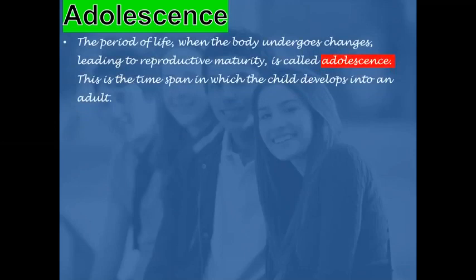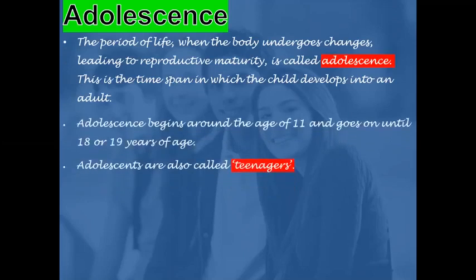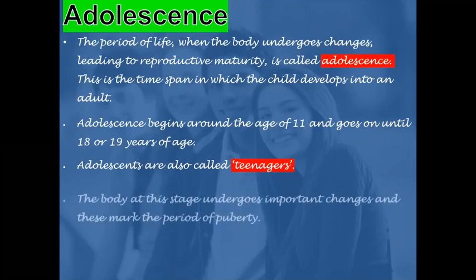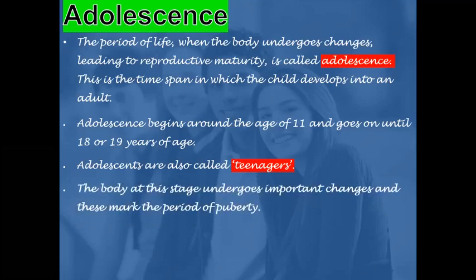The period of life when the body undergoes changes leading to reproductive maturity is called adolescence. This is the time span in which the child develops into an adult. Adolescence begins around the age of 11 and goes on until 18 or 19 years of age. Adolescents are also called teenagers.